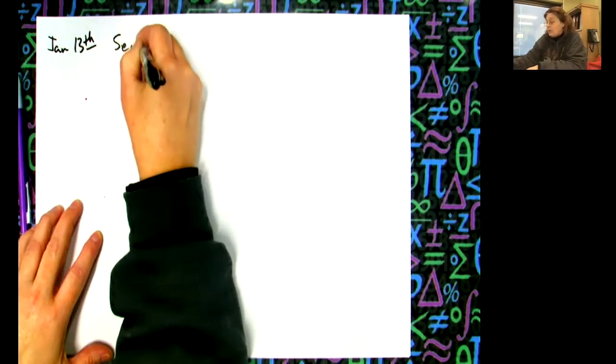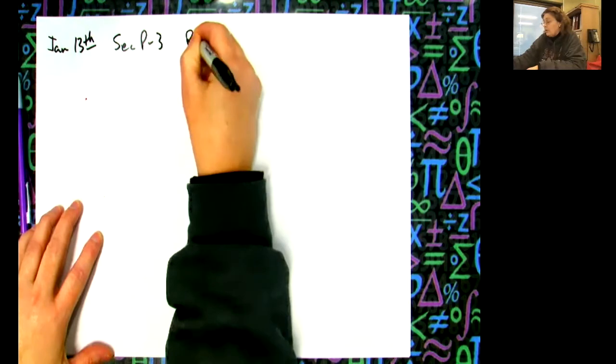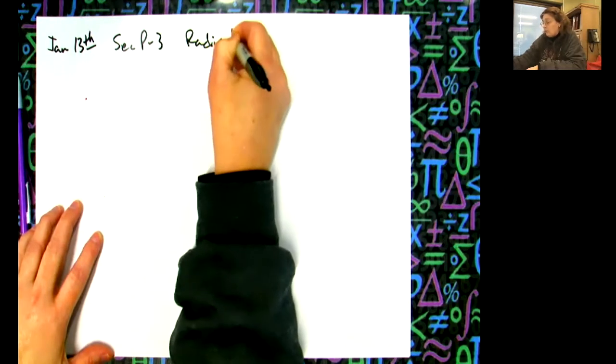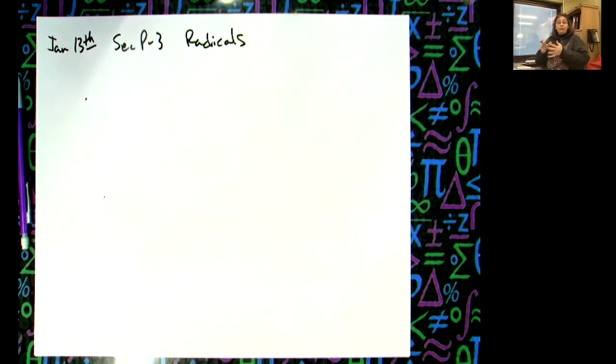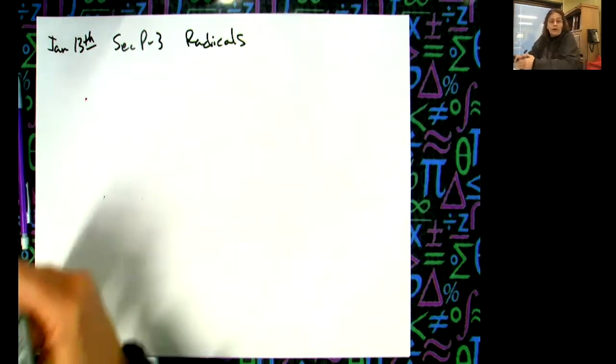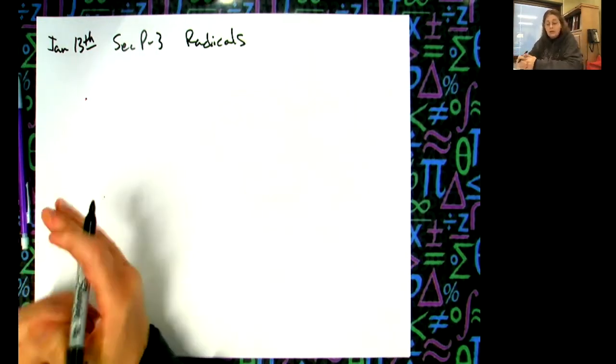Section P-3, which is anything and everything to do with radicals. It's a review section. Everything we do today would have been an entire chapter in Algebra 2, so we're just kind of touching the surface.